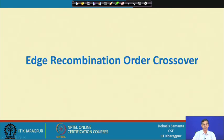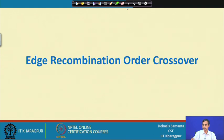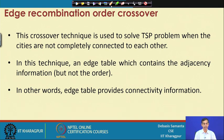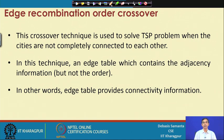The last technique is the edge recombination crossover, which is a special case that is computationally expensive but very famous for problems like the Travelling Salesman Problem (TSP). It works better for TSP problems where cities are not well connected. The search space is n factorial, which is very large for a large number of cities. This technique uses a lookup table called the edge table, which contains adjacency information for each city.